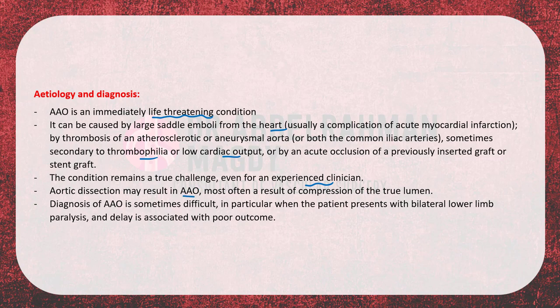Diagnosis of acute aortic occlusion is sometimes difficult, in particular when the patient presents with bilateral lower limb paralysis, so the etiology may be mistaken for a neurological one. If the patient complains of bilateral paralysis, acute aortic occlusion should be included immediately in the differential diagnosis. Delay in diagnosis is associated with a poor outcome.